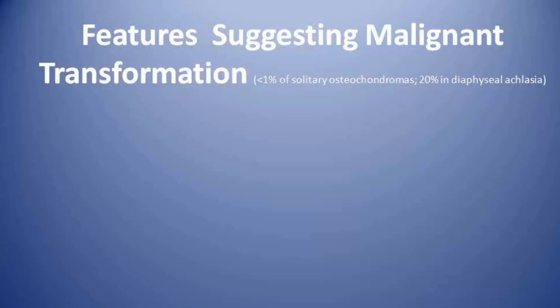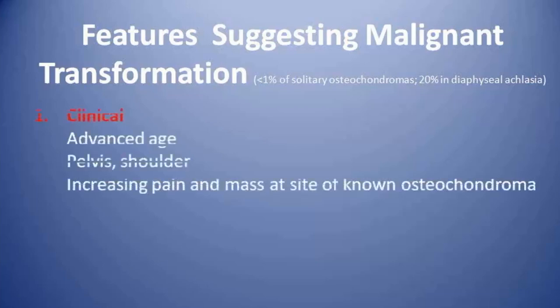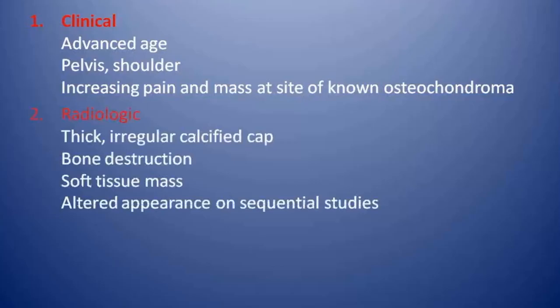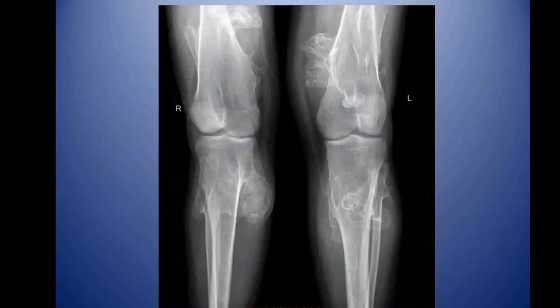There are certain clinical and radiographic features which suggest malignant transformation. The clinical features are: advanced age, lesions in the pelvis and shoulder, and increasing pain and mass at the site of a known osteochondroma. The radiographic features are: thick and irregular calcified cap, bone destruction, soft tissue mass, and altered appearance on sequential studies.